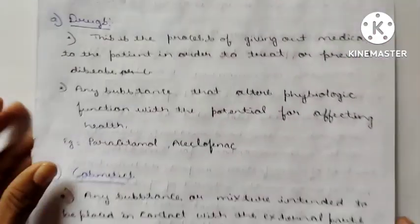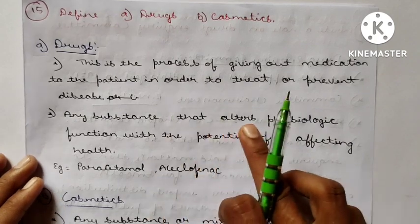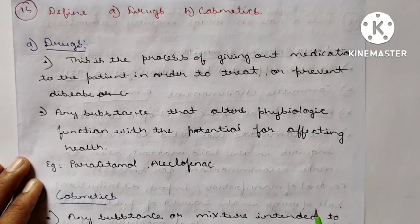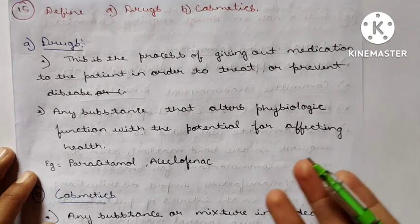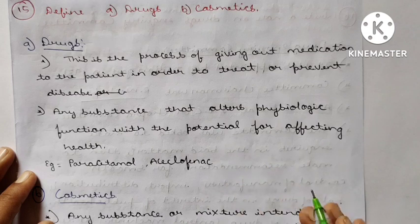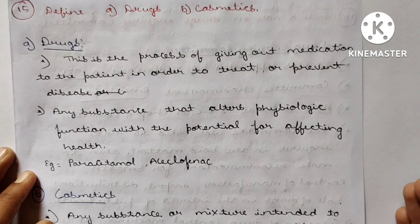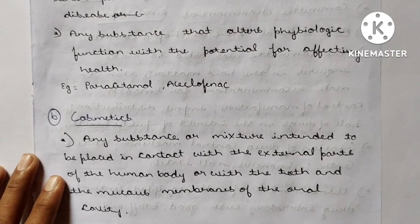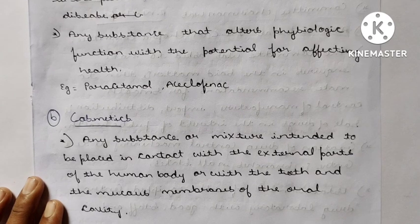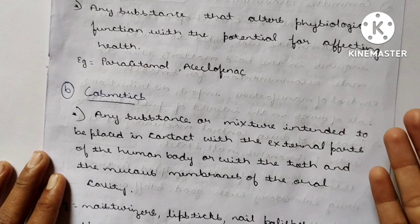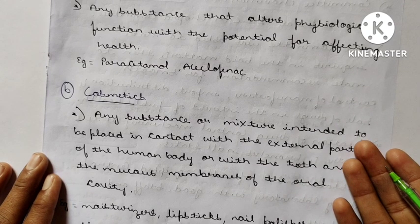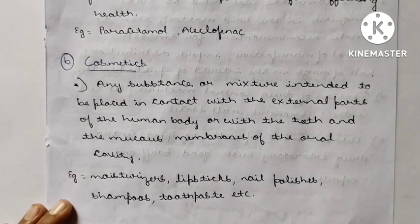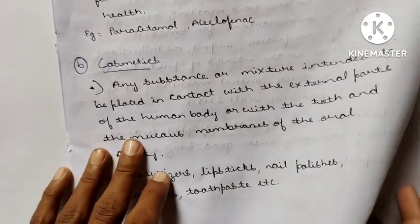Question 15: Define drugs and cosmetics. A drug is a substance given to a patient to treat or prevent disease — any substance that alters physiological function with the potential for affecting health, for example paracetamol and diclofenac. If you have fever, paracetamol reduces it through pharmacodynamic and pharmacokinetic activity. A cosmetic is any substance or mixture intended to be placed in contact with the external parts of the human body, or with teeth and mucous membranes of the oral cavity — for example, toothpaste, fairness creams, moisturizers, lipsticks, nail polishes, and shampoos.